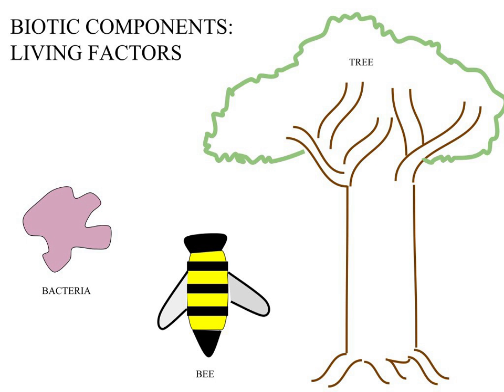Biotic components, or biotic factors, can be described as any living component that affects another organism or shapes the ecosystem. This includes both animals that consume other organisms within their ecosystem and the organisms that are being consumed. Biotic factors also include human influence, pathogens, and disease outbreaks. Each biotic factor needs the proper amount of energy and nutrition to function day to day.